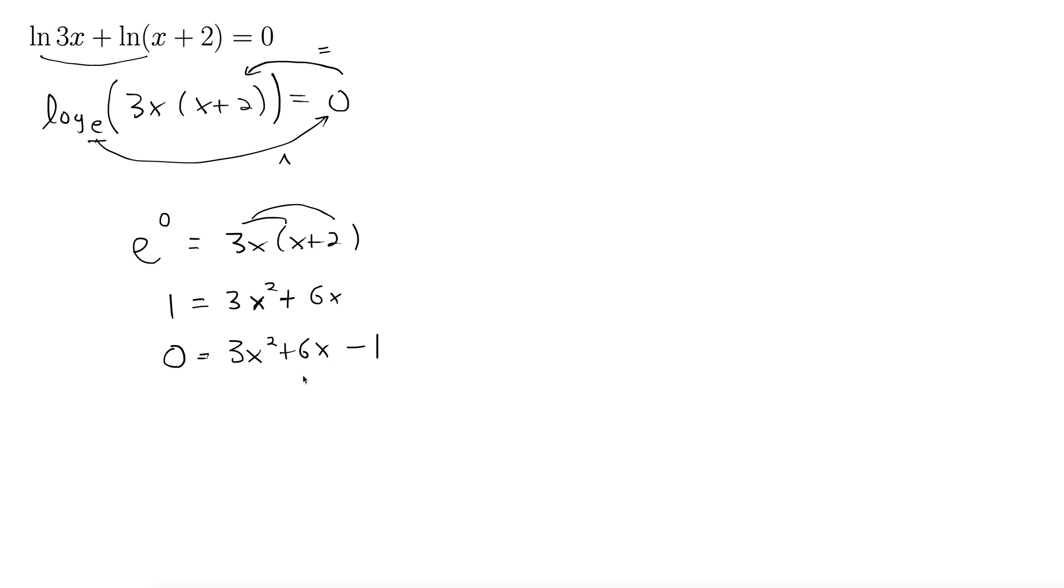Now we have a quadratic equation that we need to solve. I do a quick mental check. I'm mentally trying to factor this and noticing that it can't factor. We have a trick when it doesn't factor. That trick is the quadratic formula. So solving for x gives x equals negative b, so negative 6 plus or minus the square root of b squared, so that's 6 squared minus 4 times 3 times negative 1.